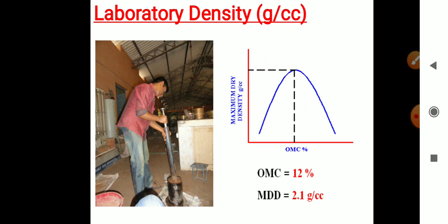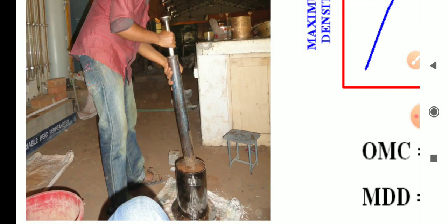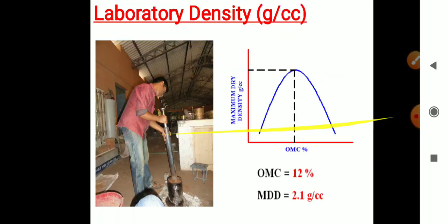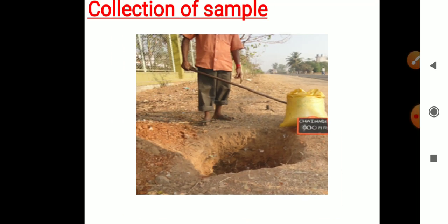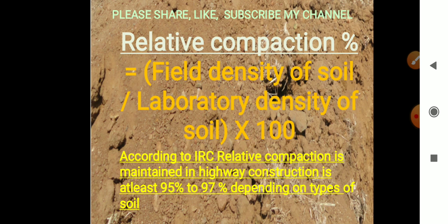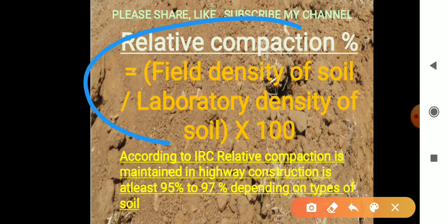In the lab, we have to conduct one test called a compaction test. The first procedure is collection of sample. For finding the relative compaction of soil, two terms are required: field density and laboratory density.